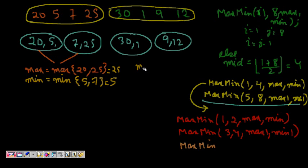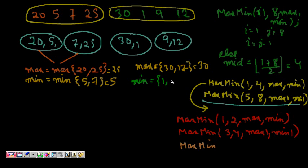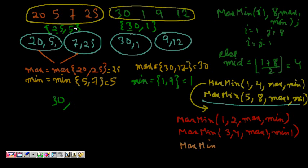For the right half: max = maximum(30, 12) = 30, min = minimum(1, 9) = 1, giving tuple (30, 1). Now combining both halves: maximum of 25 and 30 is 30, and minimum of 5 and 1 is 1. So the maximum of the whole array is 30 and the minimum is 1.